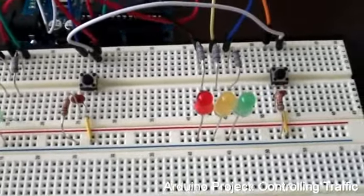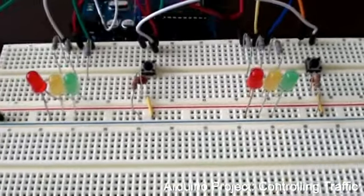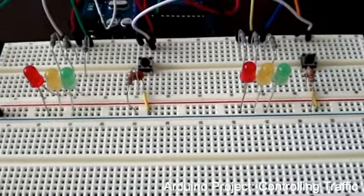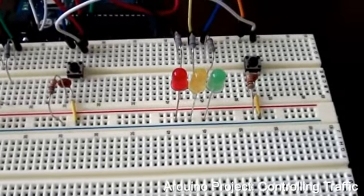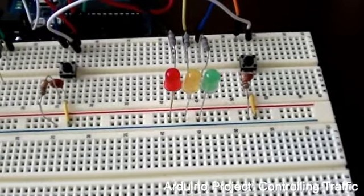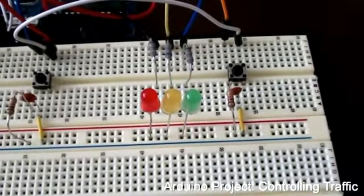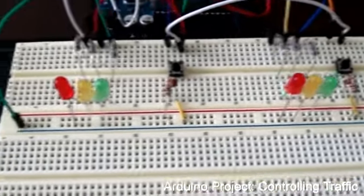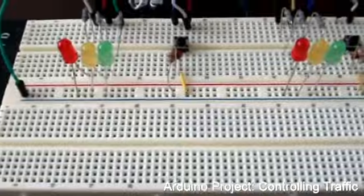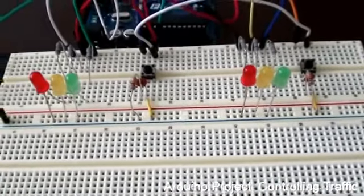We have two momentary push-button switches that are going to act as our sensors. Initially on the east side of our imaginary bridge, the green light is going to be lit up, and on the west side the red light is going to be lit up, so traffic would be able to flow from the east to the west initially.